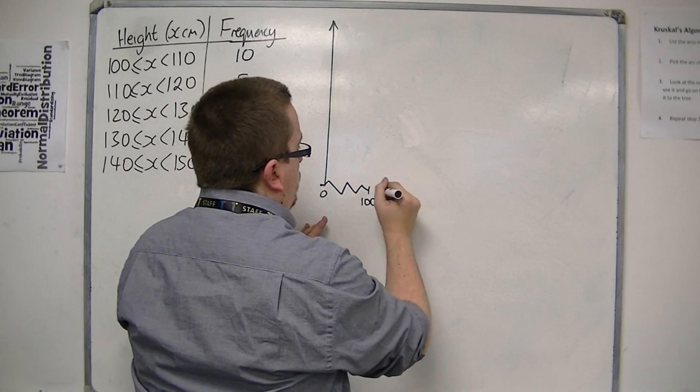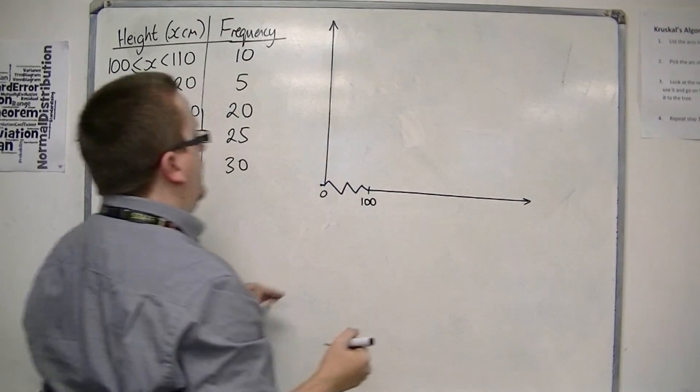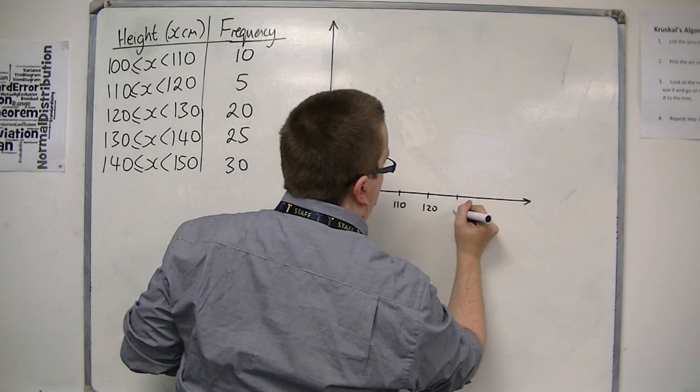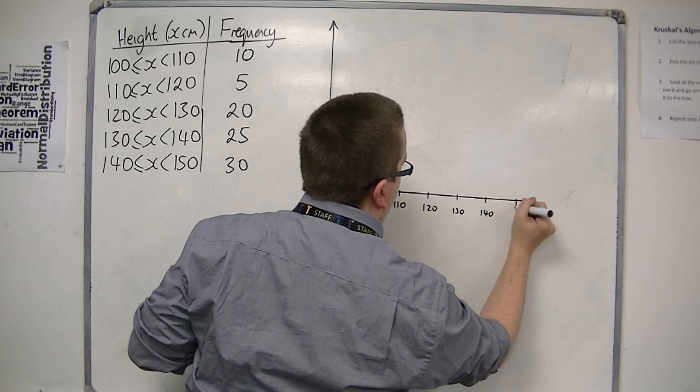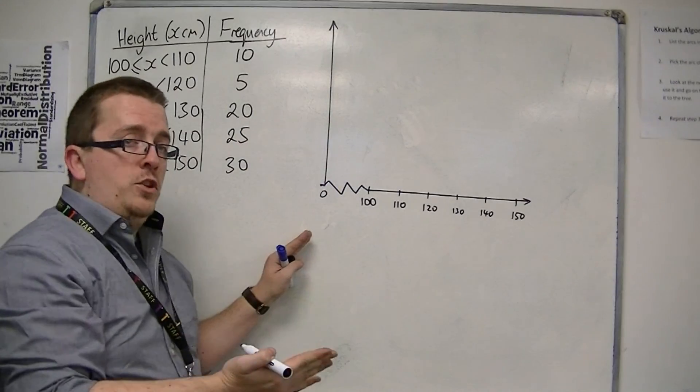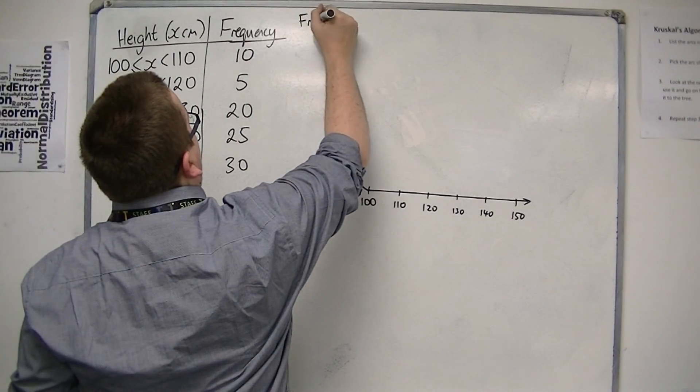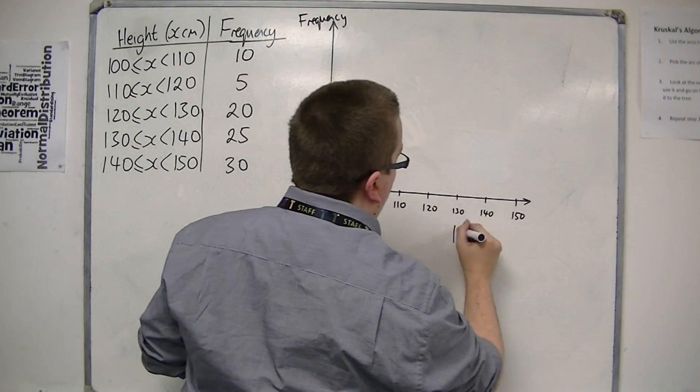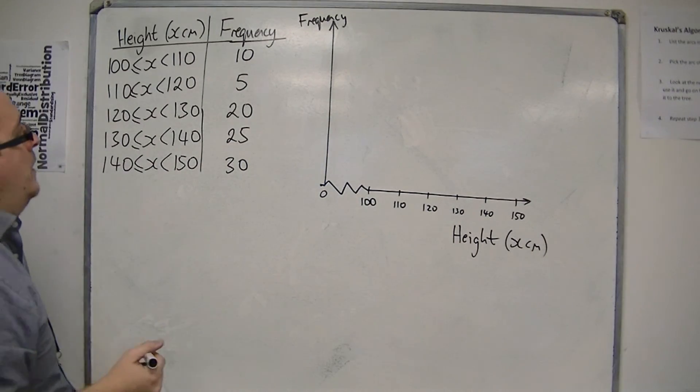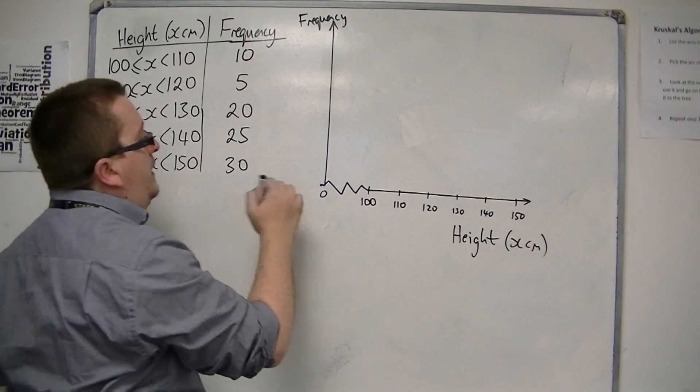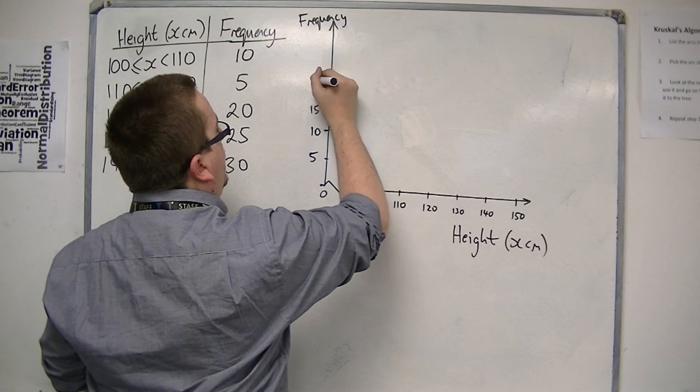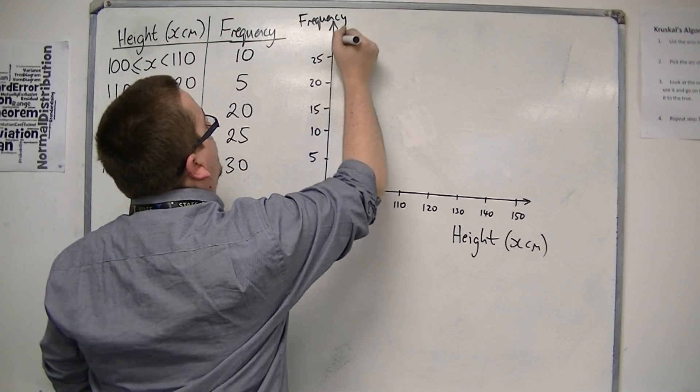Going up the vertical axis, I'm going to have the frequency. I best label my axes. That's height as x cm. The frequency is going up from 5 to 30. So I'm going to have 0, 5, 10, 15, 20, 25, 30.